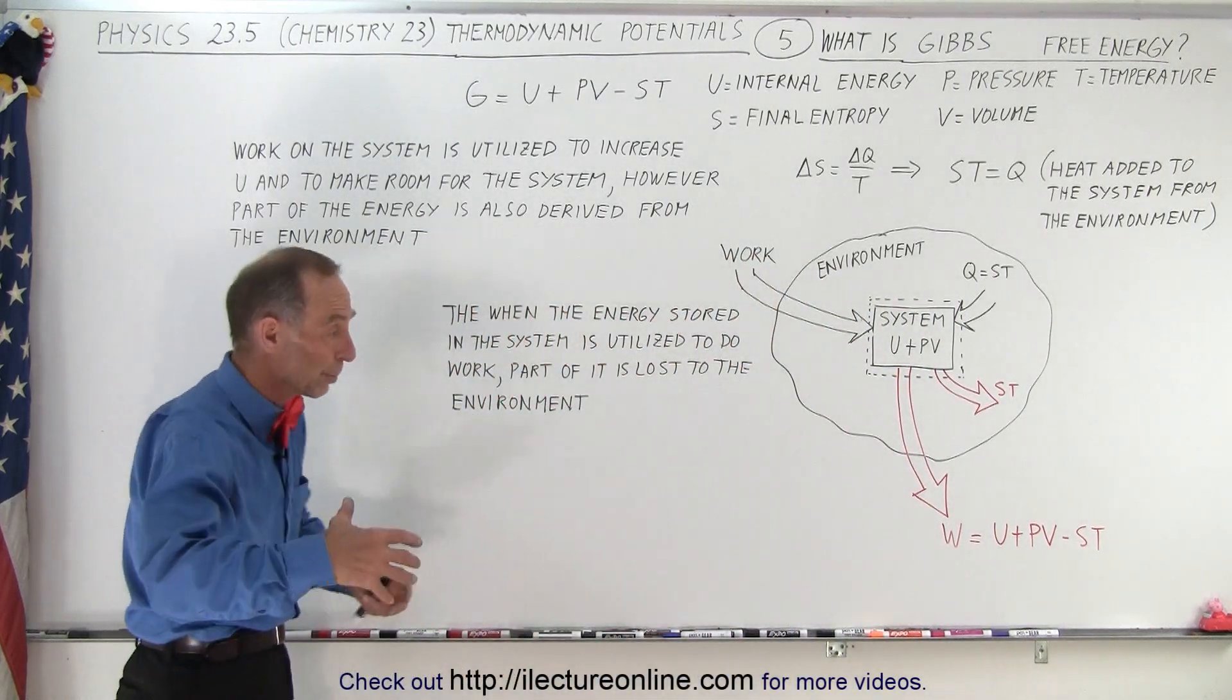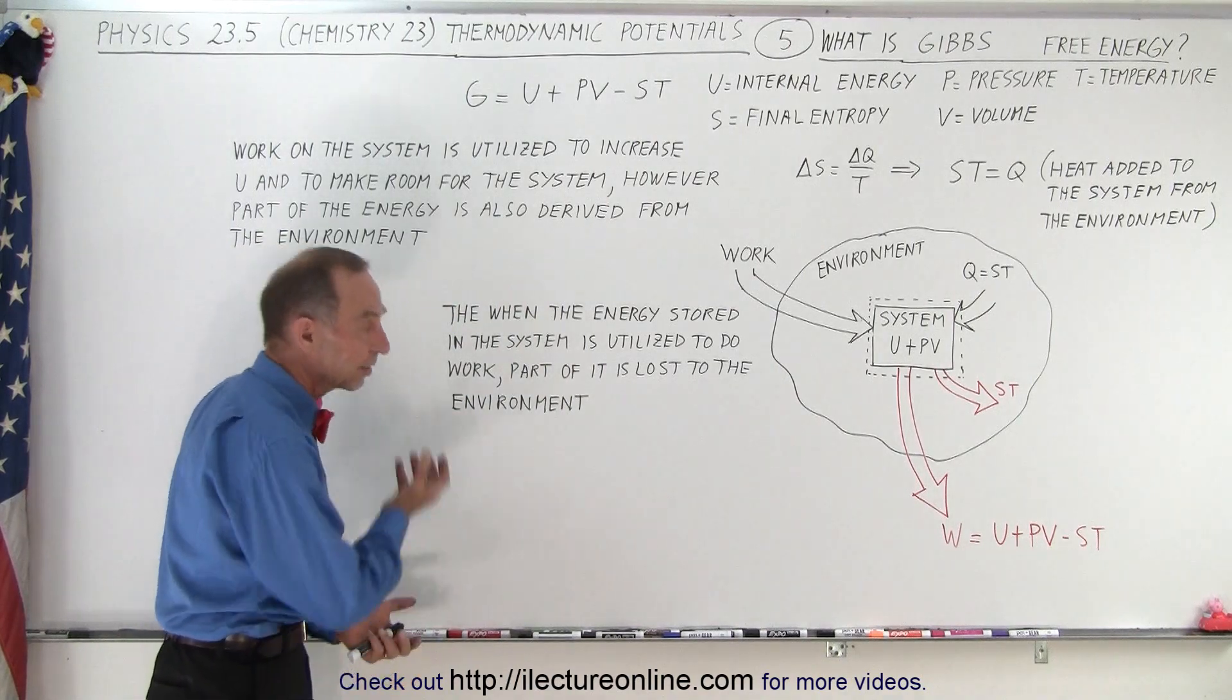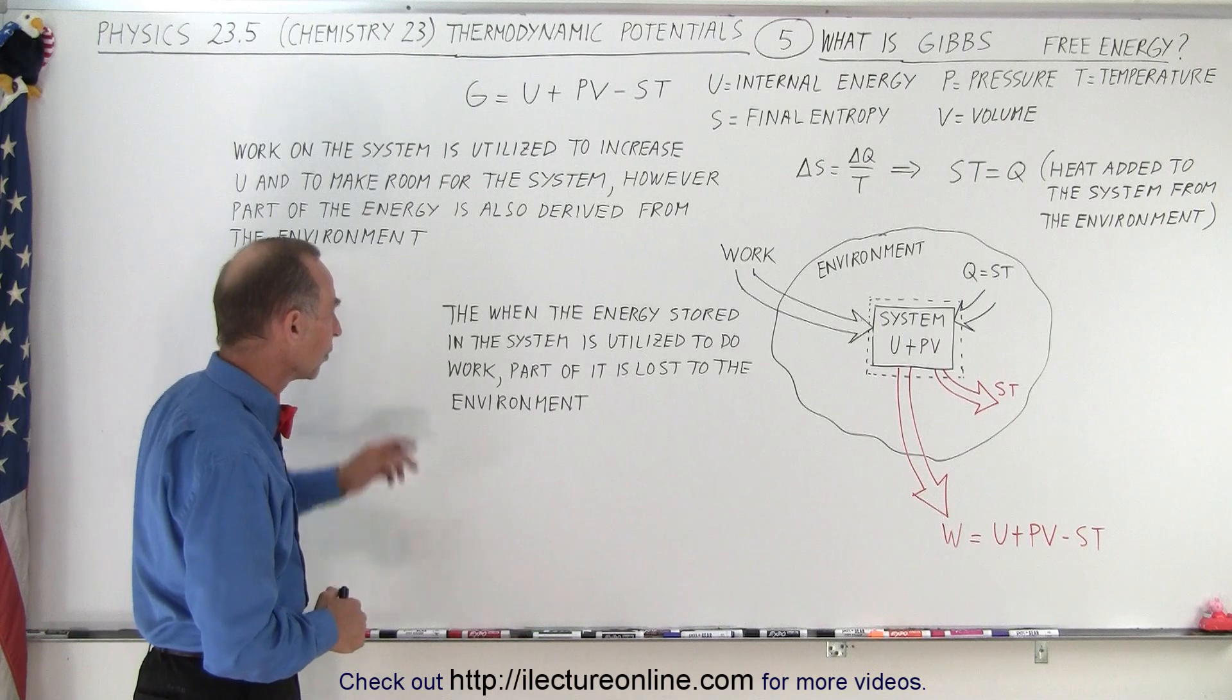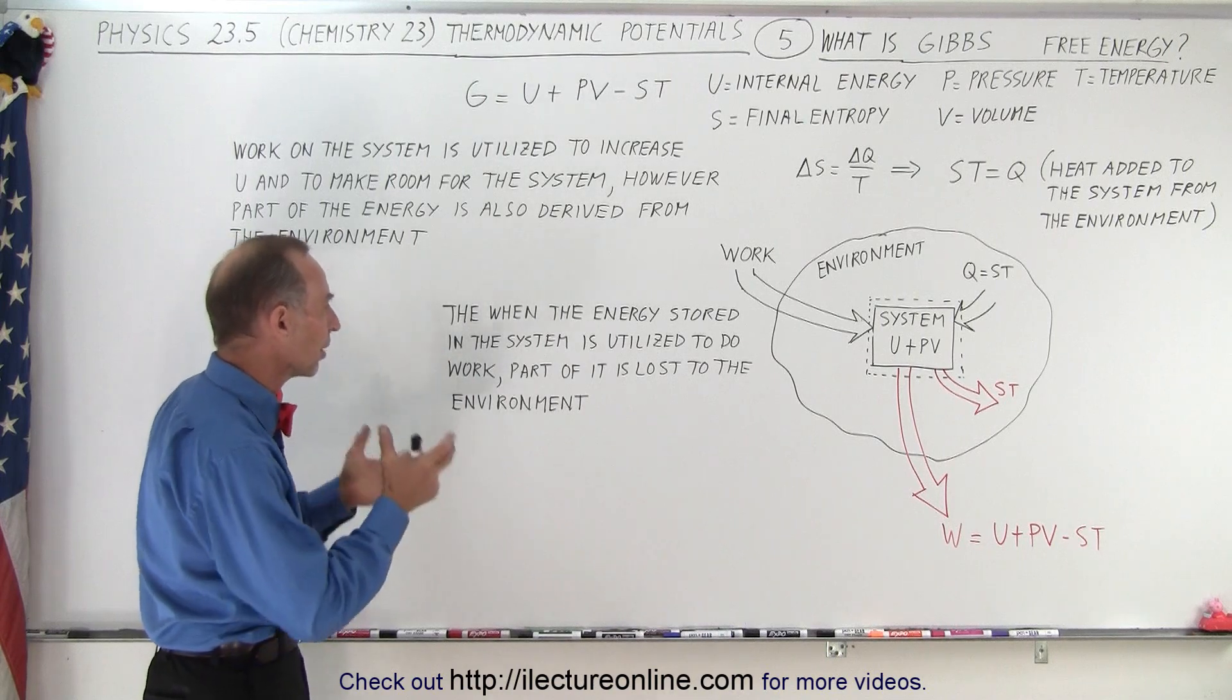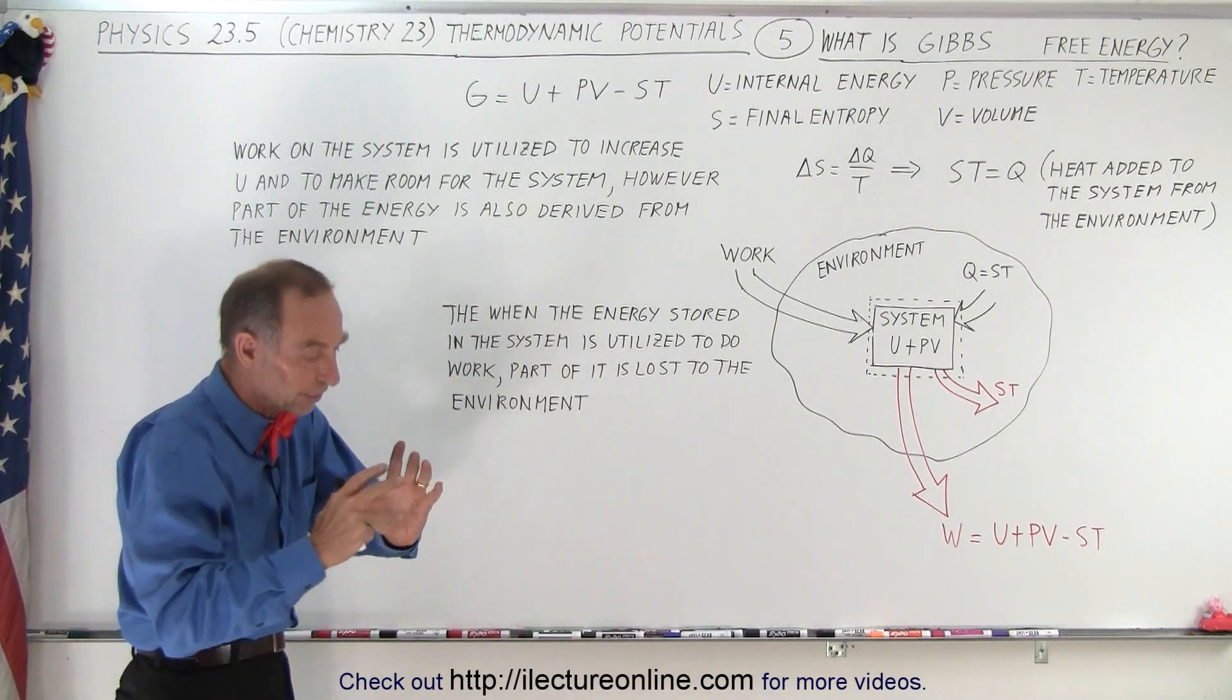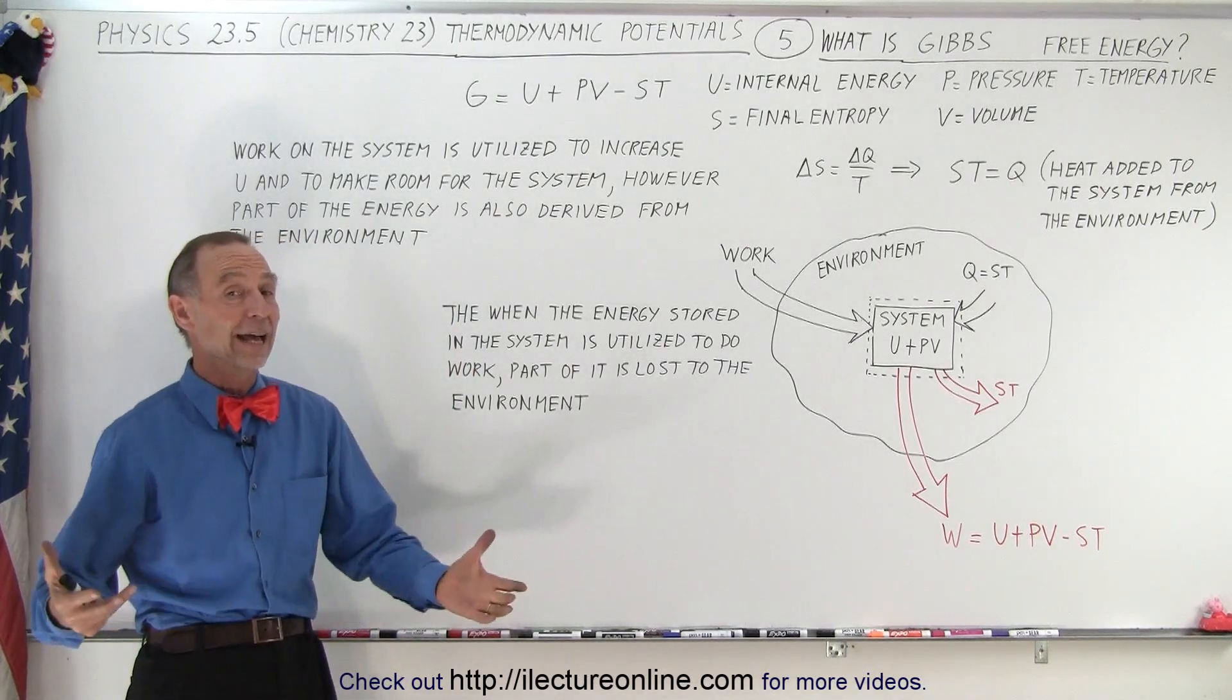When we put energy into the system, we get some energy from the environment. When we pull energy out, we give some of the energy back to the environment. When the energy stored in the system is utilized to do the work, part of it is lost to the environment. That remainder of the energy that's available to do work is called the Gibbs free energy.